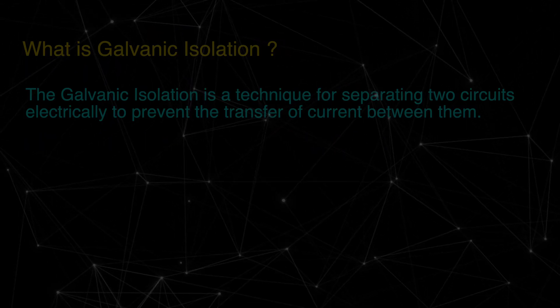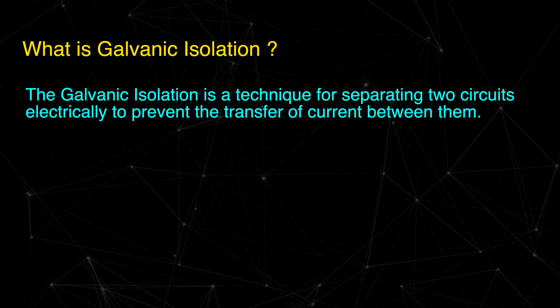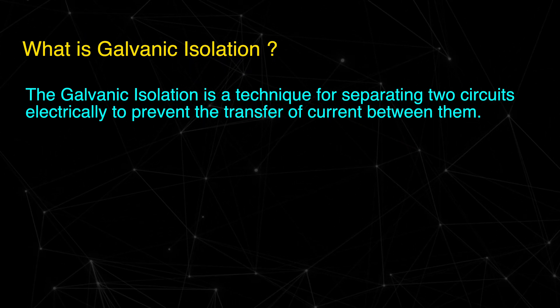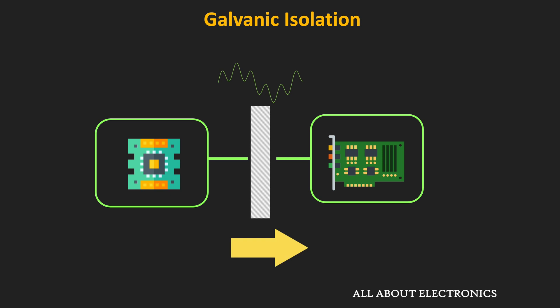Galvanic isolation is a technique for separating two circuits electrically to prevent the transfer of current between them. Although galvanic isolation prevents the flow of current between the two functional sections of the circuit, the analog or digital signal can still transfer between the two circuits. At the same time, it is also possible to transfer power between the two circuits.